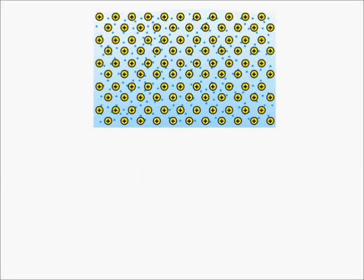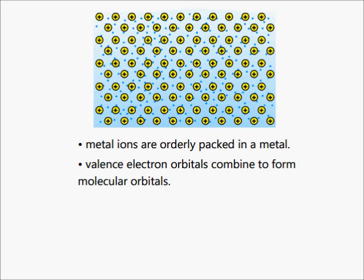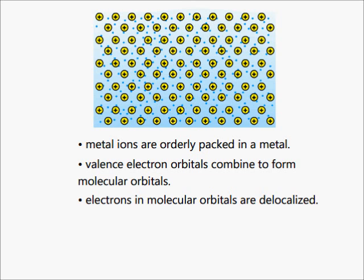In a metal, there are innumerable metal ions orderly packed. All the valence electron orbitals combine to form plenty of molecular orbitals. The electrons in these molecular orbitals get delocalized and don't remain attached to any particular metal ion.